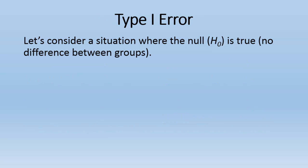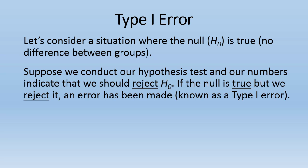Let's consider a situation where the null is true, where there's really no difference between the groups. To make this more concrete, assume that we're looking at the first-year collegiate experience in males and females — their perception towards college and how much they feel like they're part of the experience at the university. For the purpose of this example, assume it's known that males and females really show no difference in how cohesive or engaged they feel at the university on average.